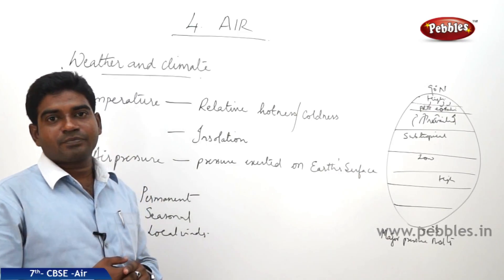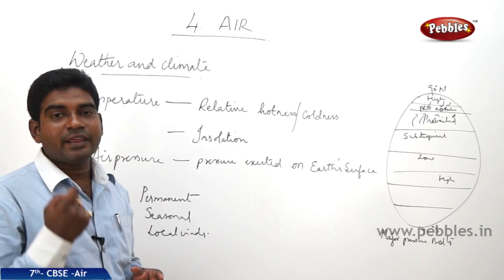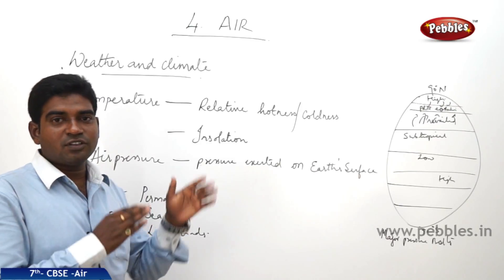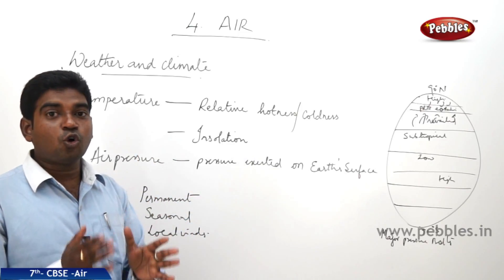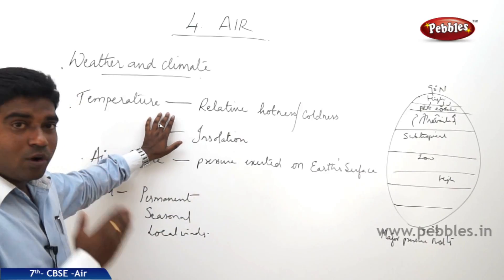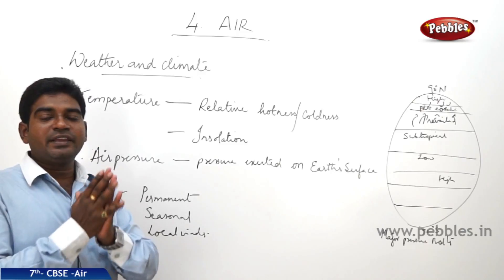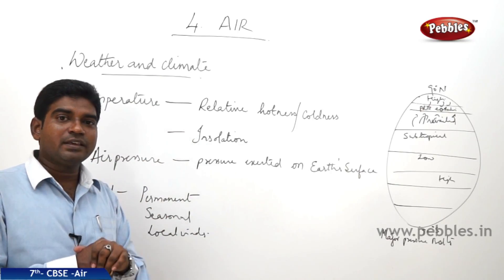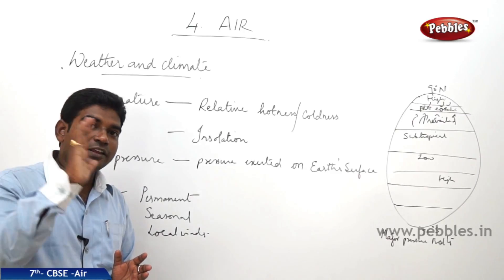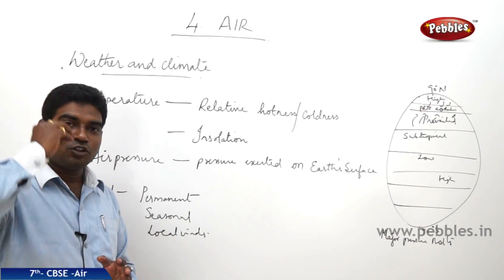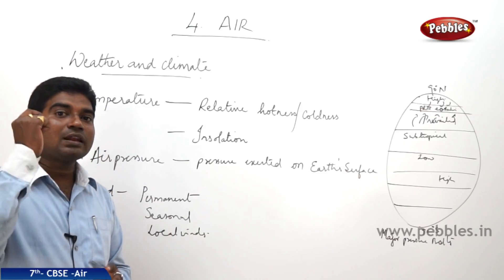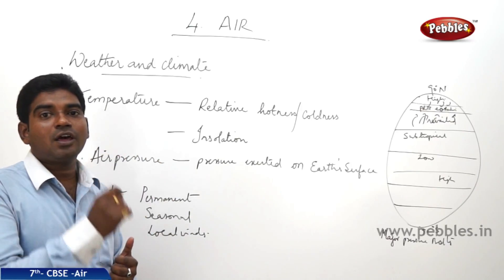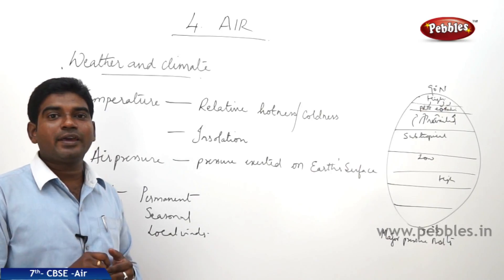Today it is a hot sunny day, a windy day, a rainy day. When the weather of an area is described, we also mention the temperature of the place — how hot or cold it is in degrees Celsius. The relative coldness or hotness of a place expressed in degrees Celsius is known as temperature. Temperatures vary with sun rays. The sun rays coming from the sun to the earth are called incoming solar radiation, which is also known as insolation.